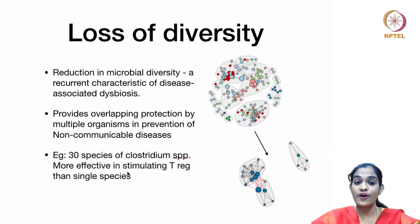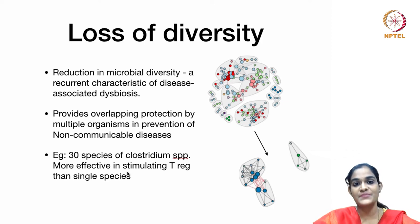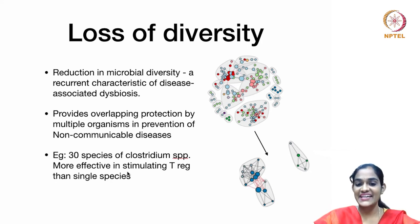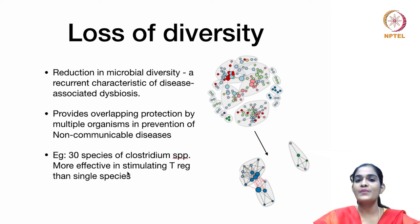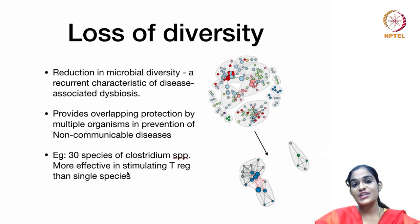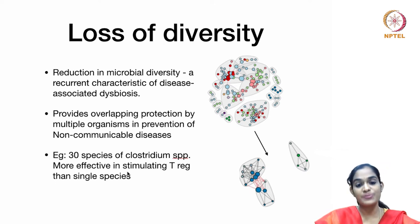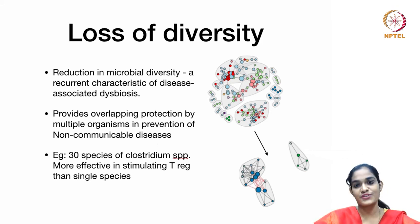The third category of dysbiosis is the loss of diversity. The microorganisms usually exist as a polymicrobial community, and reduction in microbial diversity is a recurrent characteristic of disease-associated dysbiosis. It is evident in various diet-associated dysbioses as well as autoimmune disorders like type 1 diabetes. Microbial diversity provides overlapping protection through multiple organisms in prevention of non-communicable diseases. For example, 30 different species of Clostridium are more effective in stimulating T regulatory cells than a single species.